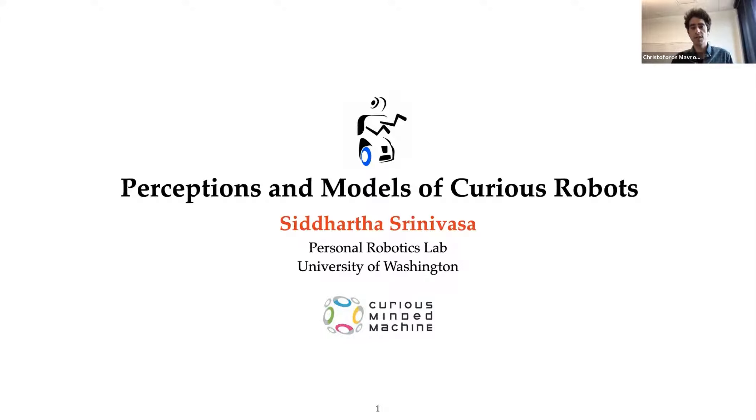Sid is a full stack roboticist with the goal of enabling robots to perform complex manipulation tasks under uncertainty and clutter with and around people. To this end he has built several robots including Herb, Ada, Chimp, Musher, and has written software frameworks such as OpenRave and Dart, and best paper award-winning algorithms such as Chomp, Bitstar, and Legibility that are used extensively by roboticists around the world.